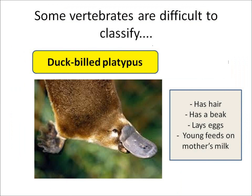Some vertebrates are very difficult to classify. Look at the duck-billed platypus. It's covered in hair like a mammal, and the young feeds on its mother's milk like a mammal. But it also has a beak like a bird and it lays eggs like a bird. So how should we classify it? It's not that straightforward.